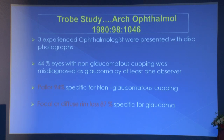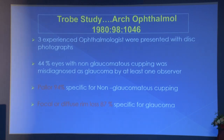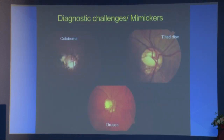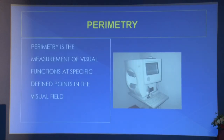There is huge variation among observers examining glaucoma discs, so one must be well trained — looking at 1000 normal discs to confidently diagnose glaucoma. Pallor is very specific for non-glaucoma causes. Mimickers of glaucoma include tilted disc, drusen, and coloboma.